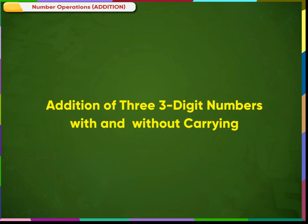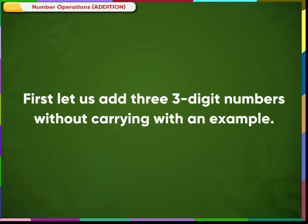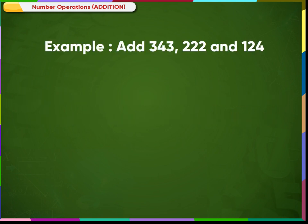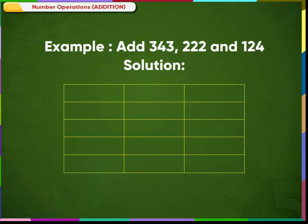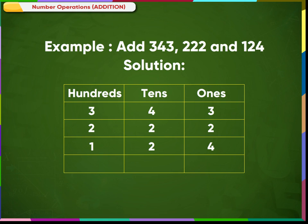Addition of three three-digit numbers without carrying. Example: add 343, 222 and 124. First, let us place the numbers in the place value chart as shown on the screen. Add the ones column: 3 plus 2 plus 4 is equal to 9. Add the tens column: 4 plus 2 plus 2 is equal to 8. Finally, add the hundreds column: 3 plus 2 plus 1 is equal to 6. The sum of 343 plus 222 plus 124 is equal to 689.